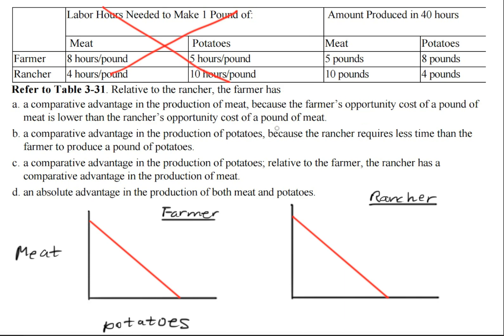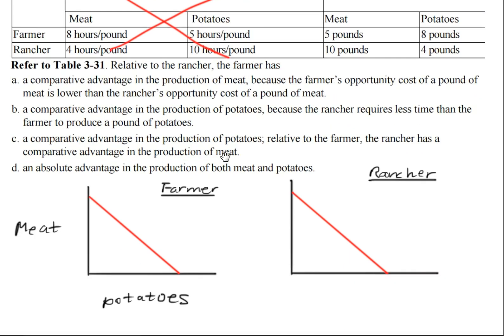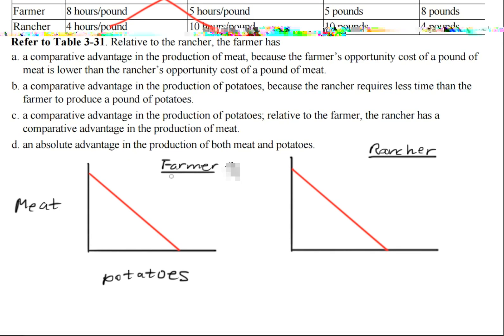This is not any important information for here. We'll solely focus our attention on this given information. What we're going to do is construct a production possibility frontier curve using the numbers here. Right here, I have constructed the curves for the farmer and the rancher.